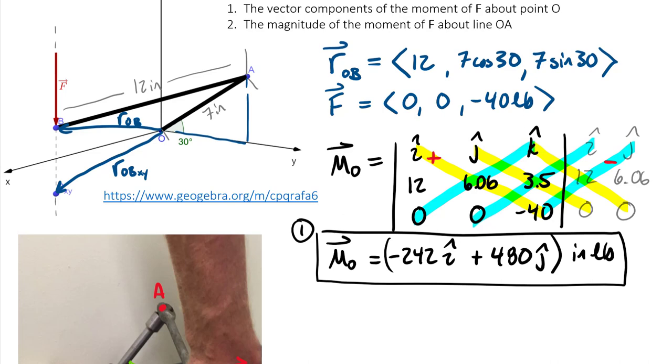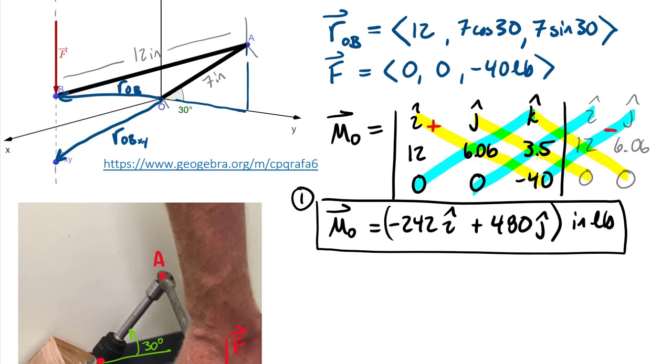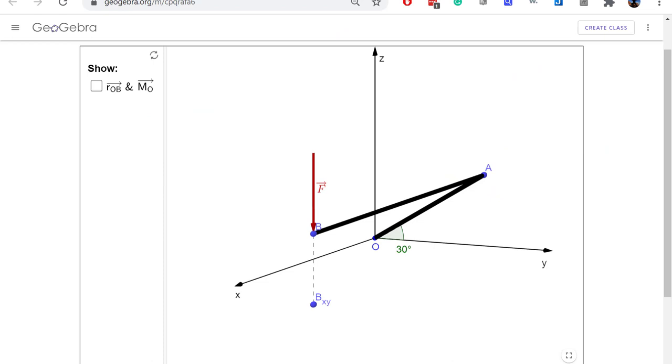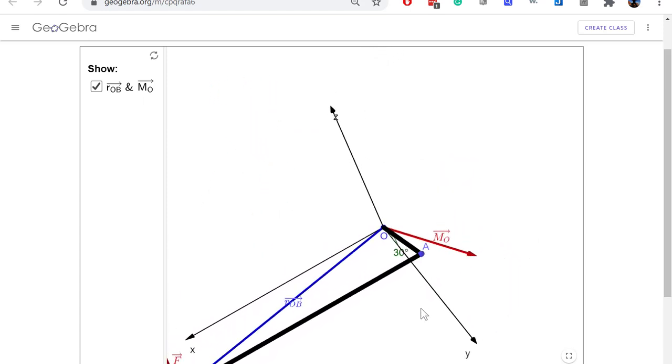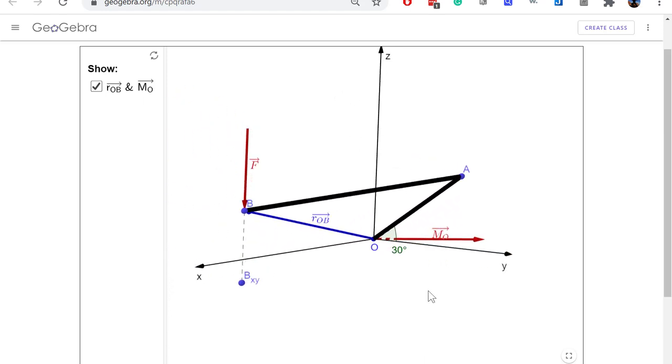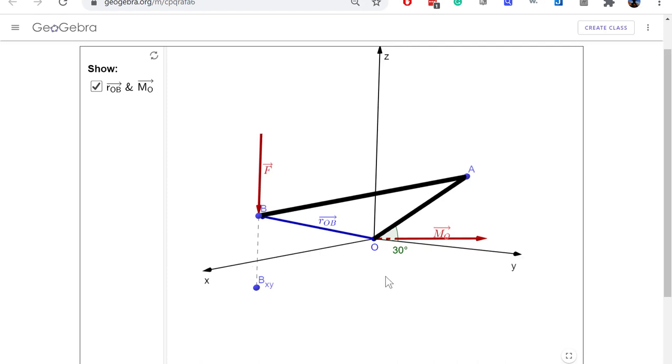Just for discussion sake, let's compute the magnitude of this moment. Using the Pythagorean theorem we'd find out that M_O is equal to 537.6 inch pounds. That's applying the Pythagorean theorem to those two components. If I take that moment around point O in this interactive, I end up with this M_O. You can see it's lying in that XY plane. We can look at it from the top and see it's coming over here with a positive Y component and a negative X component which reflects the value that we found for that moment.